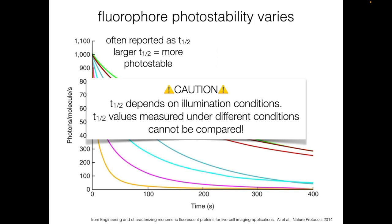T½ values measured under different conditions can't be compared. Remember that every time a fluorophore is excited, it has some chance of photobleaching. If you deliver more excitation light, more excitation events will occur and the photobleaching rate will increase. In the graph shown here, all curves were measured under comparable conditions, so we can compare the T½ values. But if you see a T½ value reported on its own, you can't compare it with other T½ values unless you know they were measured under the same conditions. For practical purposes, this means you shouldn't compare T½ values from different publications.